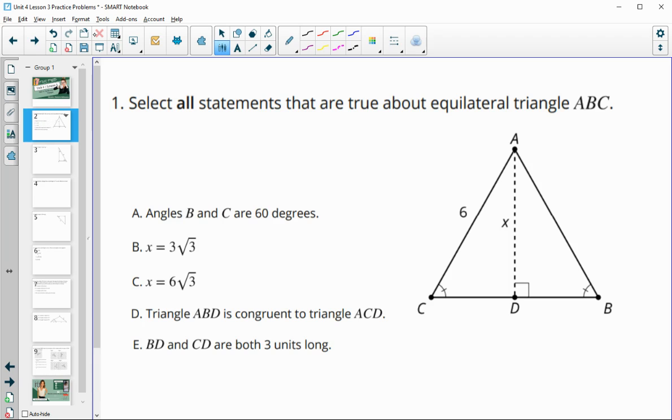Number one asks us to select all true statements about this equilateral triangle. First statement being that angle B and angle C are 60 degrees. We know that that's true because an equilateral triangle is also equiangular.